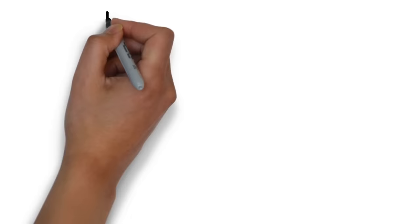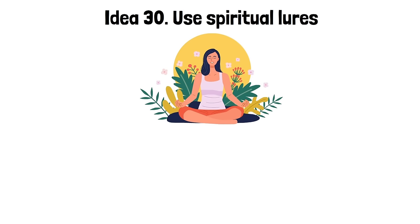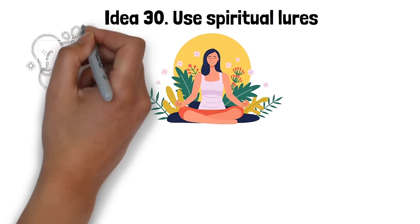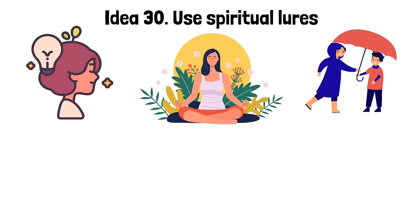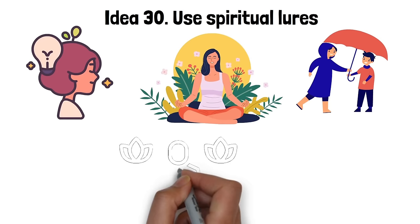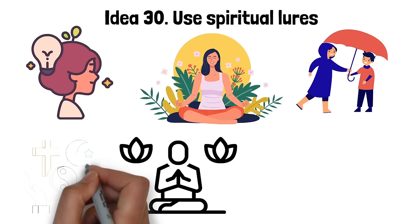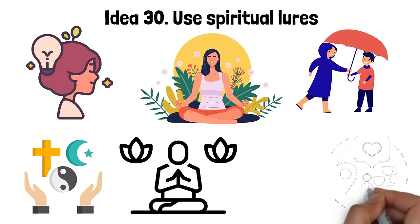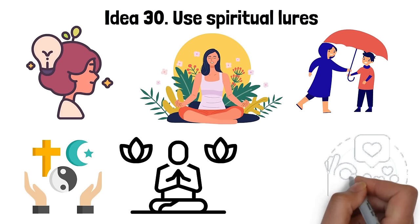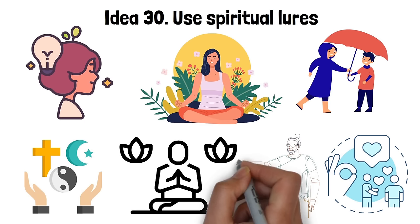Idea 30. Use spiritual lures. Using spiritual lures refers to appealing to a person's deeper or spiritual aspects to create a compelling attraction. It is about showcasing qualities that transcend physical or material allure, such as wisdom, compassion, or inner peace. You might discuss philosophical or spiritual ideas, or you might demonstrate acts of kindness or generosity. The intent is to connect on a profound, soulful level, sparking intrigue and fascination. A spiritual connection can be powerful and enduring because it taps into a person's core beliefs and values. However, it's essential to be genuine in these interactions, as authenticity is vital in establishing a profound spiritual connection. Manipulation or deception in this context can backfire, leading to distrust and disillusionment.